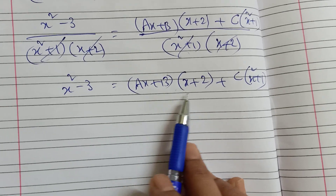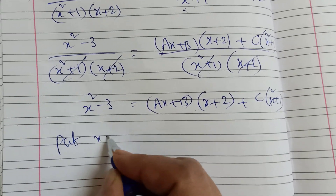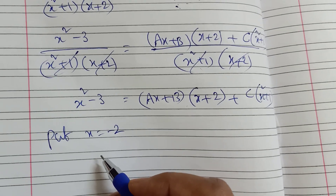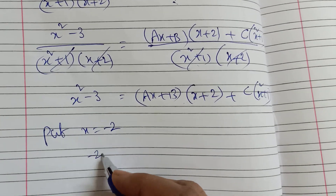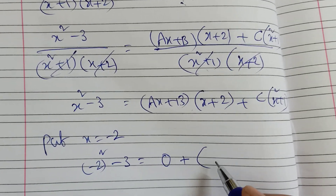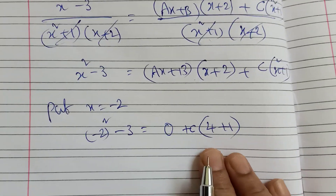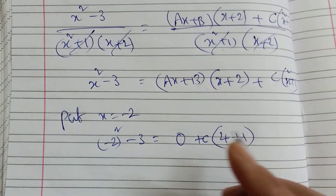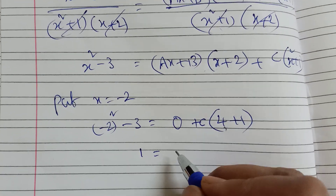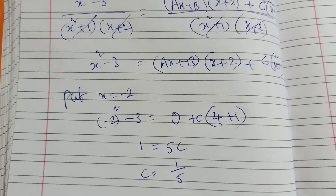Let x equal to minus 2. Then: minus 2 whole square minus 3 equals 4 minus 3 equals 1. The (ax plus b)(x plus 2) term becomes 0. So 1 equals c of (minus 2 whole square plus 1) equals c times 5. Therefore c equals 1 by 5.